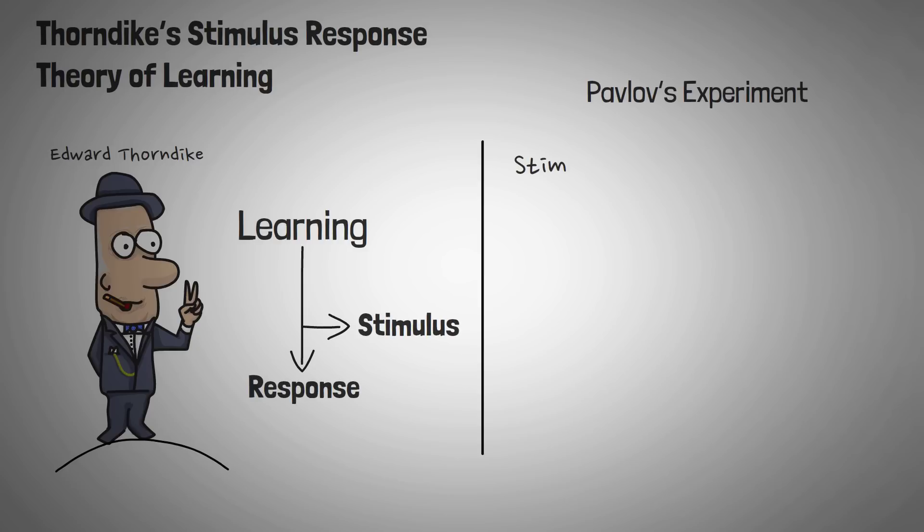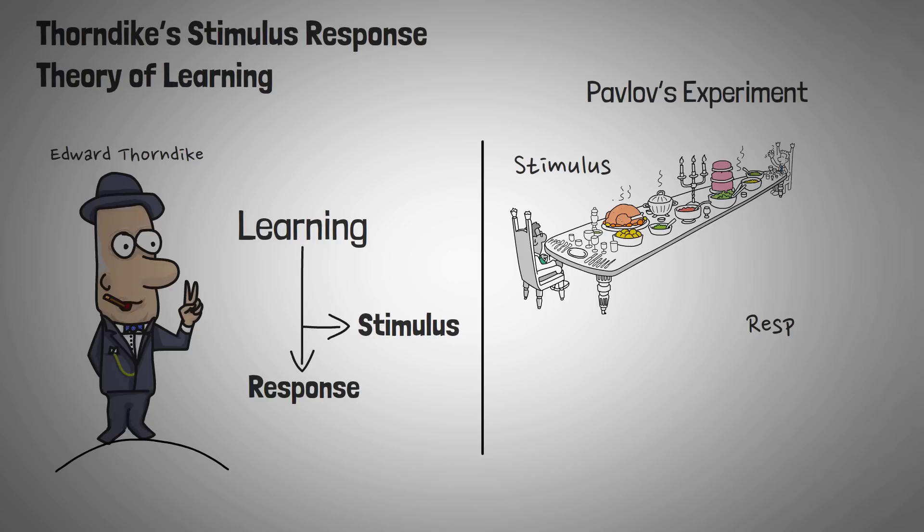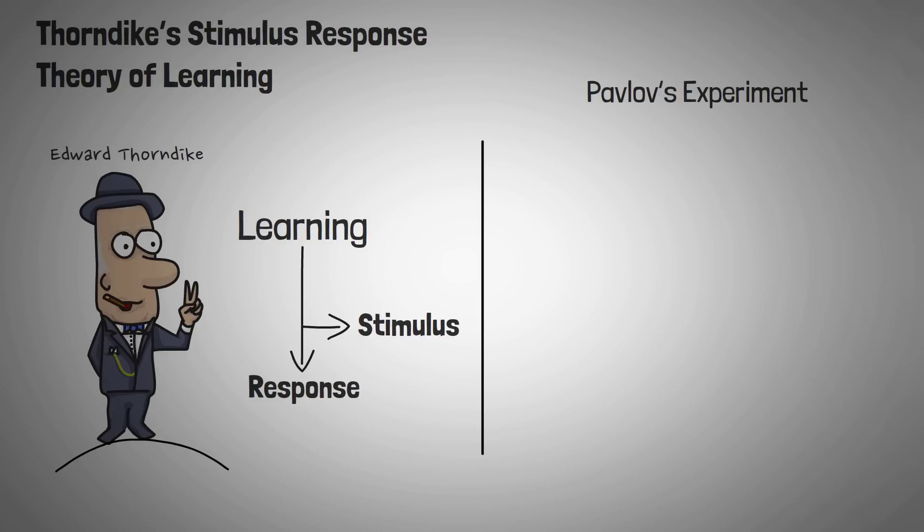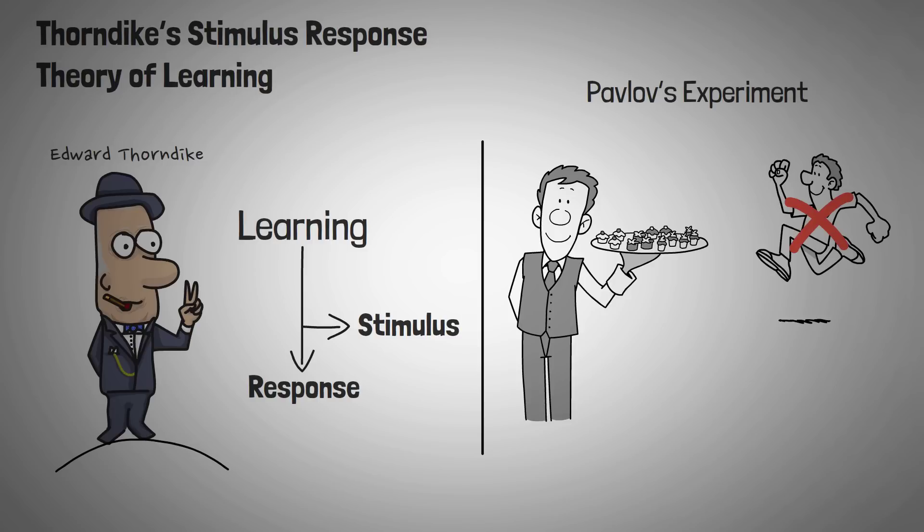In Pavlov's famous experiment, the stimulus was food and the response was salivation. He believed that all learning depended on the strength of the relationship between the stimulus and the response. If that relationship was strong, the response was likely to occur when the stimulus was presented. In order to elicit a specific response to a specific stimulus, you had to strengthen its relationship in one of a few ways.